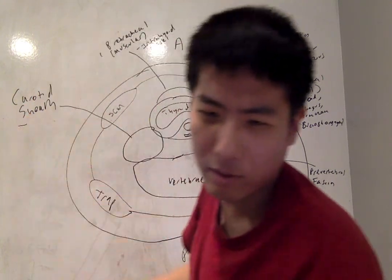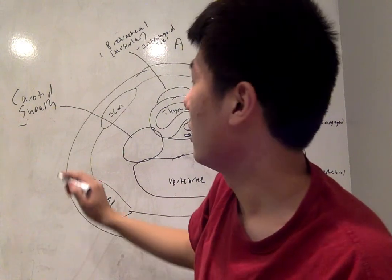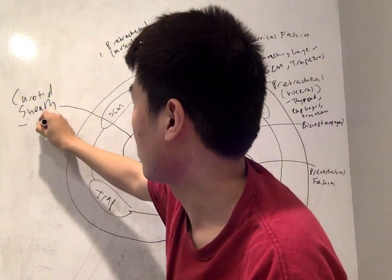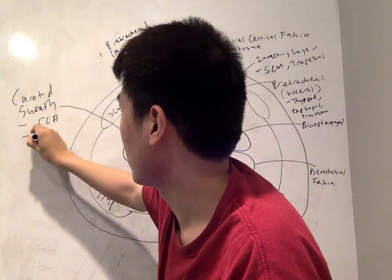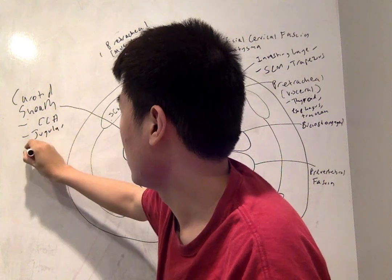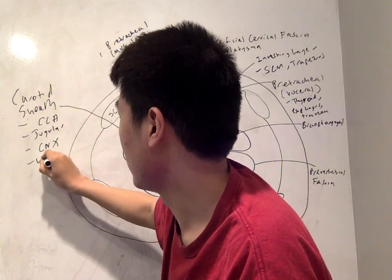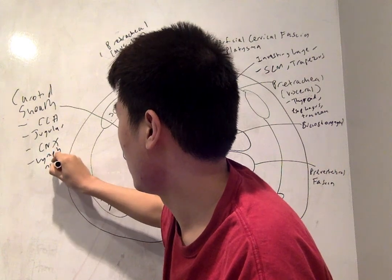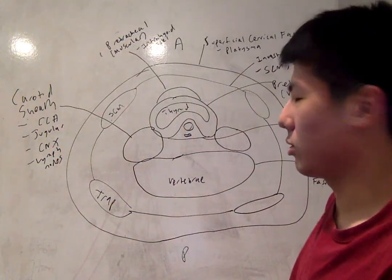And they convey some very important vascular structures. First of all, the common carotid artery, the jugular, the tenth cranial nerve, as well as the lymph nodes.